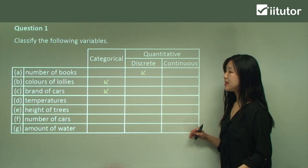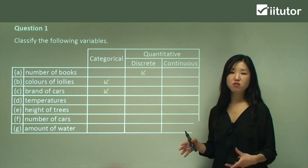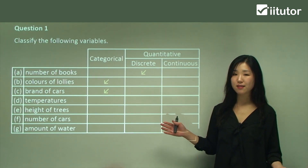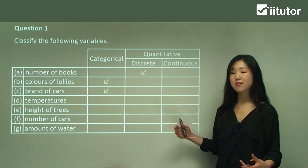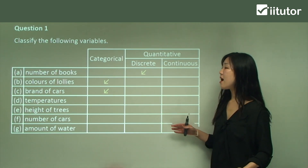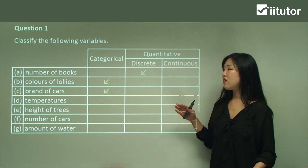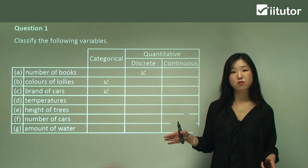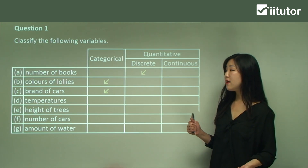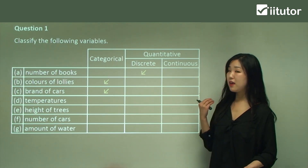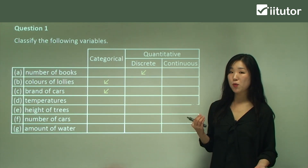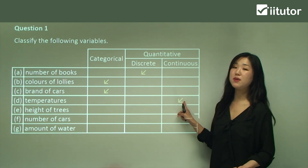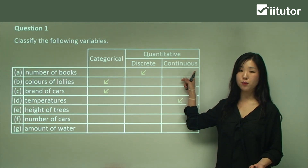Now D — temperatures. Temperatures like 100 degrees Celsius or 37.5 degrees Celsius — it's not a category; it's a quantitative measure. But ask yourself: is it countable? Can we count temperature? No, we can't. So it must be a quantitative continuous variable.